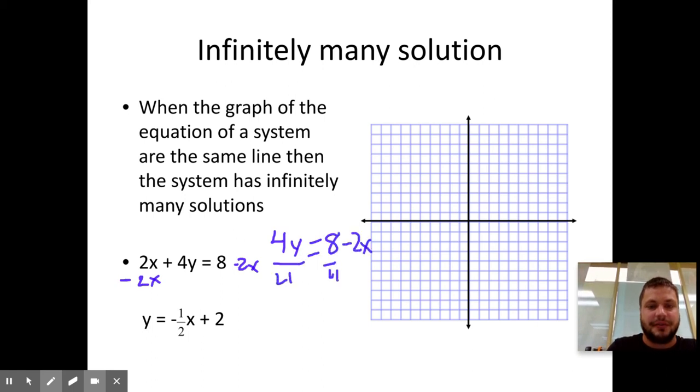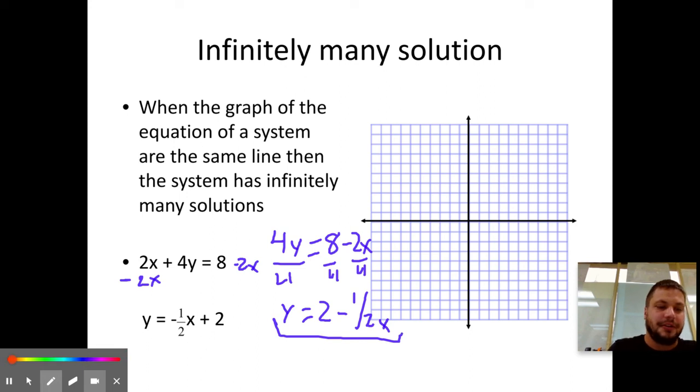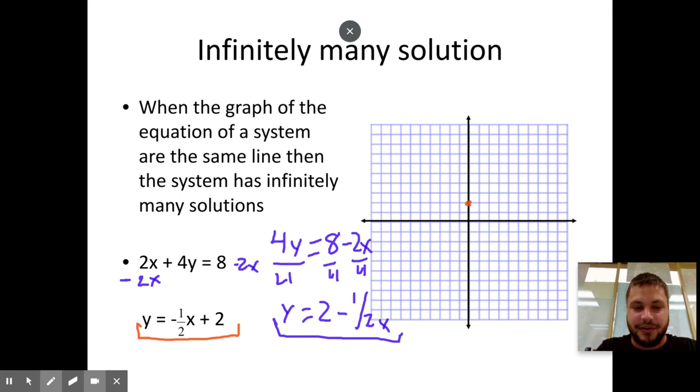So I have 4y is equal to 8 minus 2x. Then divide by 4, everything. So I have y equals 2 minus 1 half x. Now look at my blue line, the equation of my blue line. Look at the equation of what's going to be my red line. I recognize right now that they're exactly the same. If you don't, then just start graphing them.